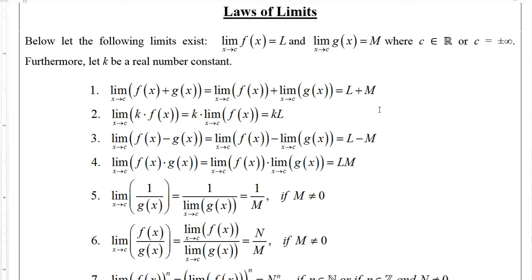These laws we're going to look at all have the same basic assumptions. The hypothesis is that the limit of f(x) as x approaches c exists and equals some real number L, and similarly the limit of g(x) as x approaches c equals some real number M. These properties work whether c is a real number or positive or negative infinity. We're also going to let k be any real number constant.